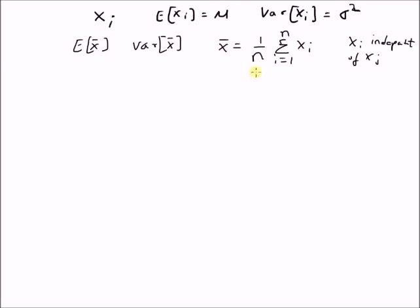Clearly, the sample mean is also a random variable based on the given observations — it basically changes when the observations change. So it can be treated as a random variable, as we can derive its mean and variance.